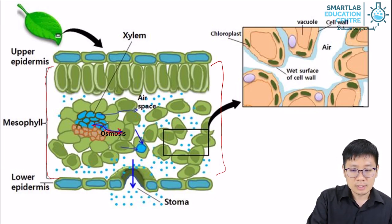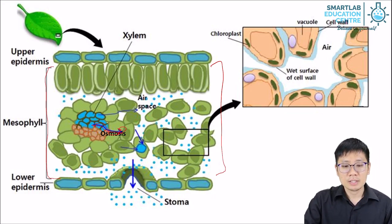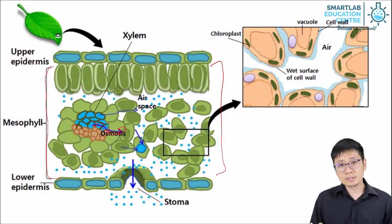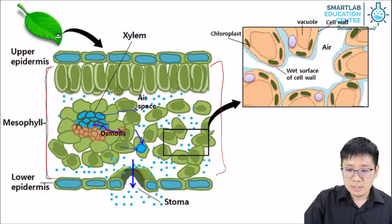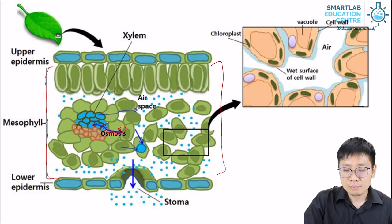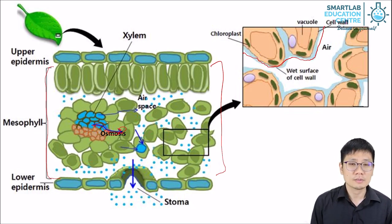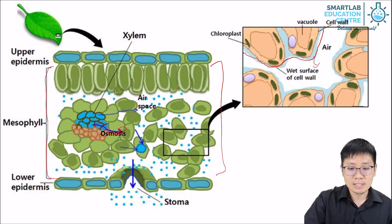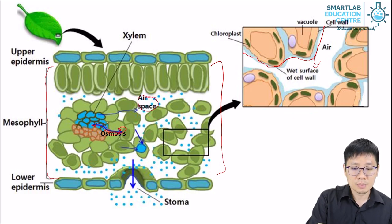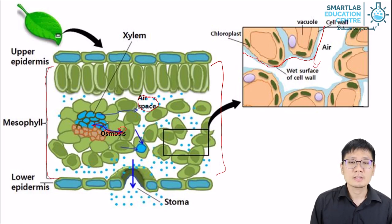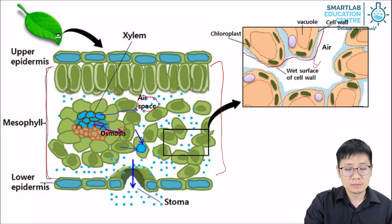Mesophyll cells absorb water from the xylem by osmosis, so the water first moves out like that. The water is now in the mesophyll cells, as well as on the surface of the mesophyll cells. On the surface of the mesophyll cells, you can see there is a wet surface — a layer of moisture. This layer of moisture is like a piece of wet cloth. The water molecules from this surface can evaporate to the airspace. There is a lot of airspace in a leaf, and this is where all the water vapour will be trapped, but not for long.